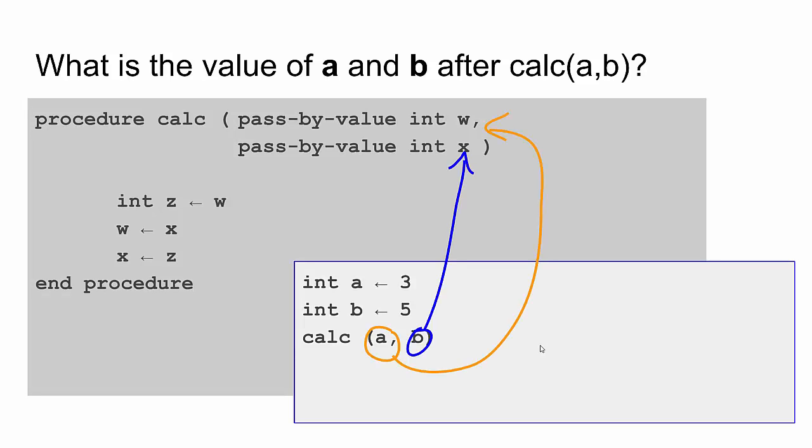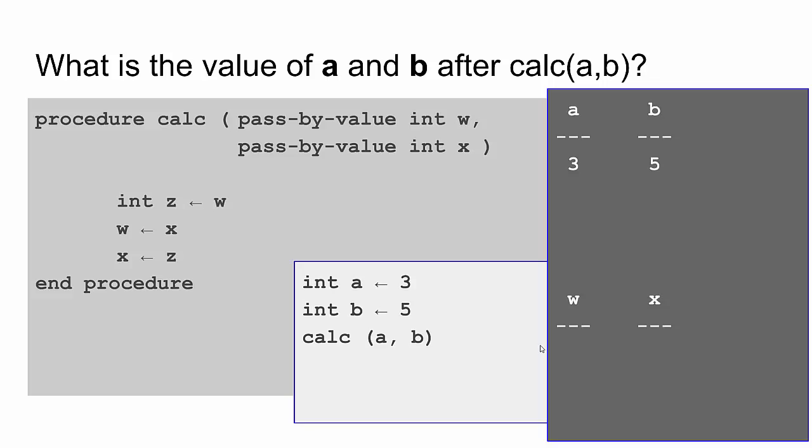Here you can see when I'm calling a procedure, the order in which I pass my values applies. So since a comes first, a is assigned to w because w is the first parameter in the procedure. And b comes second, so b goes to the second parameter in the procedure. So what that looks like in my scratch paper, which is this darkest box here, is I have variable a assigned the value 3, and variable b assigned the value 5. When I call calc passing it a and b, because these are passed by value, the value 3, which is a, is copied over into w, and the value for b, which is 5, is copied over into x.